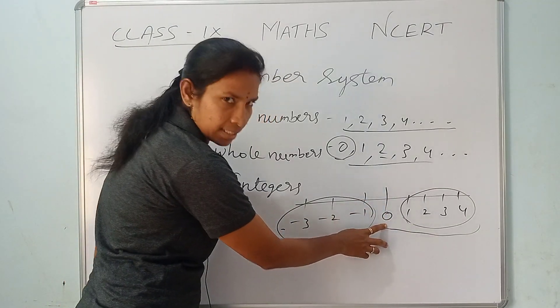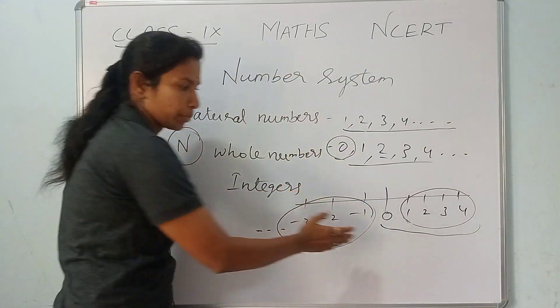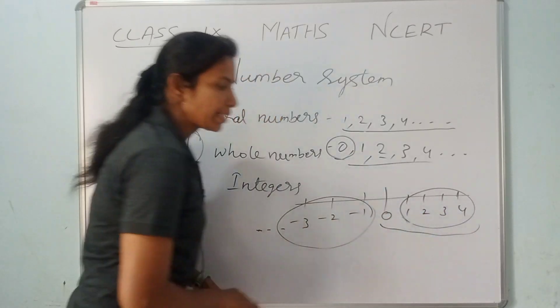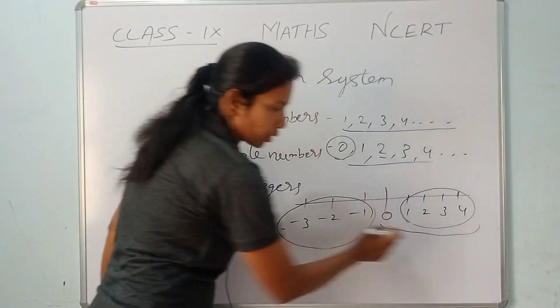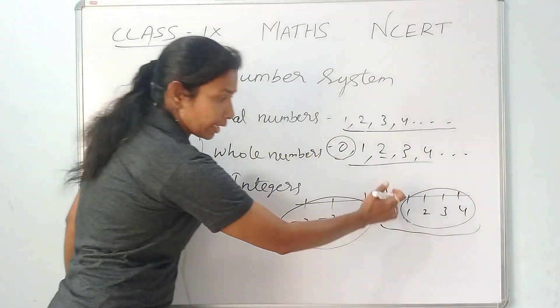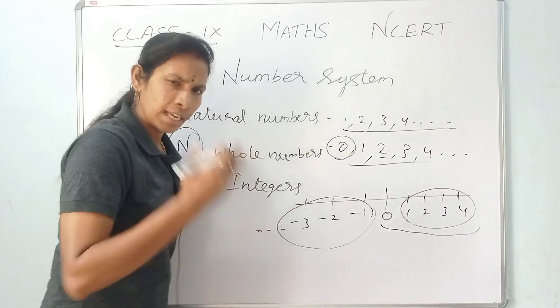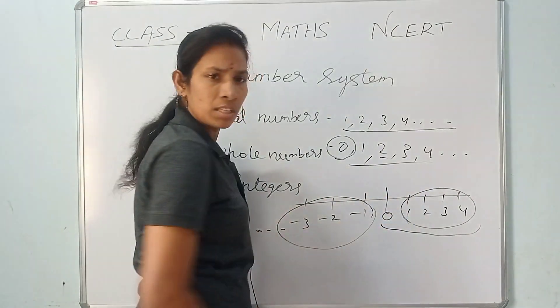On the number line, 0 is placed at the center. The right side has positive numbers: 1, 2, 3, 4, and so on. This is the basic number line concept.